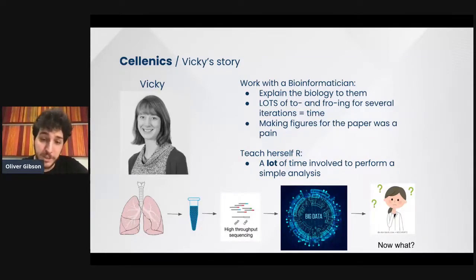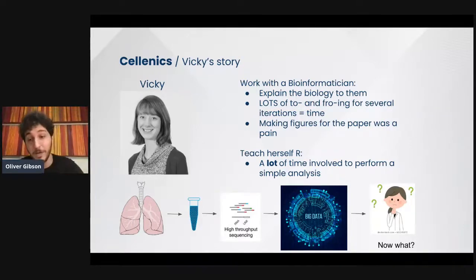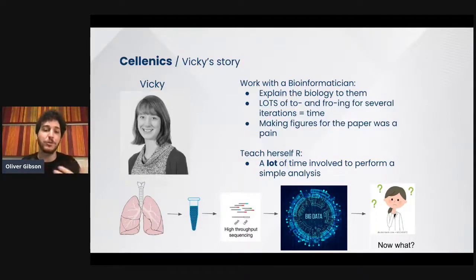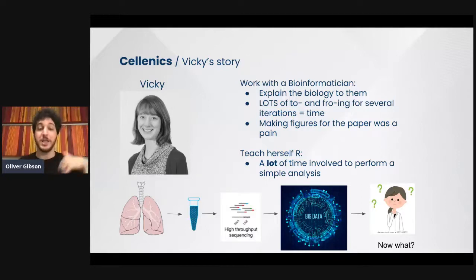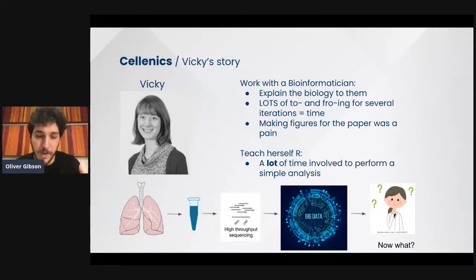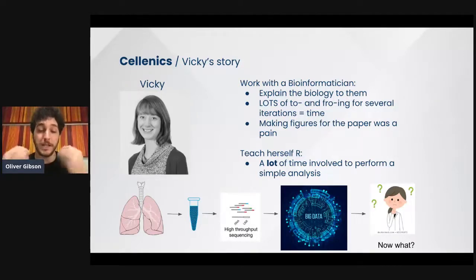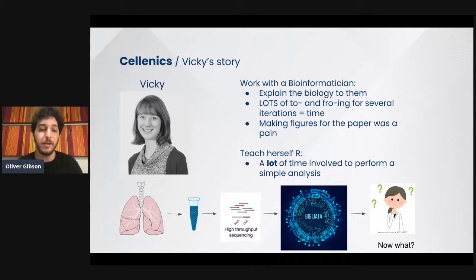To work with a bioinformatician, she would need to explain the biology to them and work in a close relationship with them, which led to a lot of back and forth for several iterations — a lot of interchange — to make the actual figures that Vicky wanted to make. And because she's the one that really has the expertise on this data and knows why she went for this experiment, she's the one that really wanted to have control of this data. Working this way didn't let her have full control over her data.